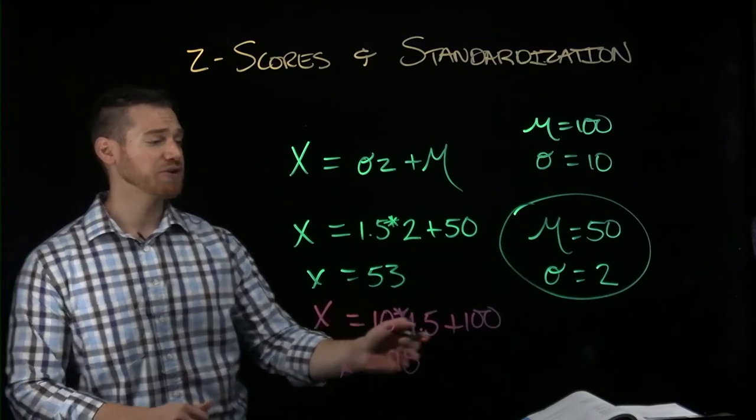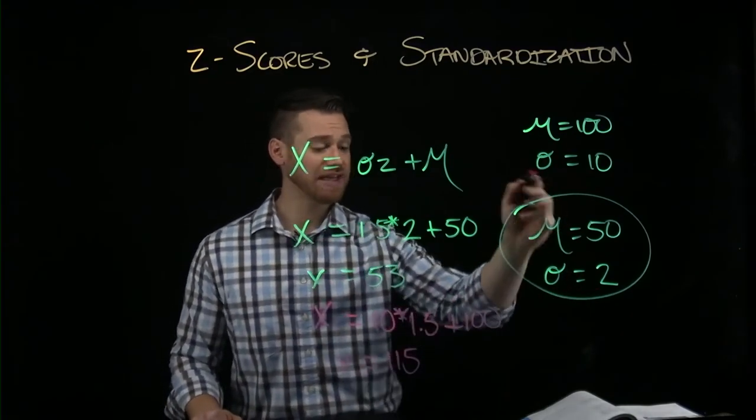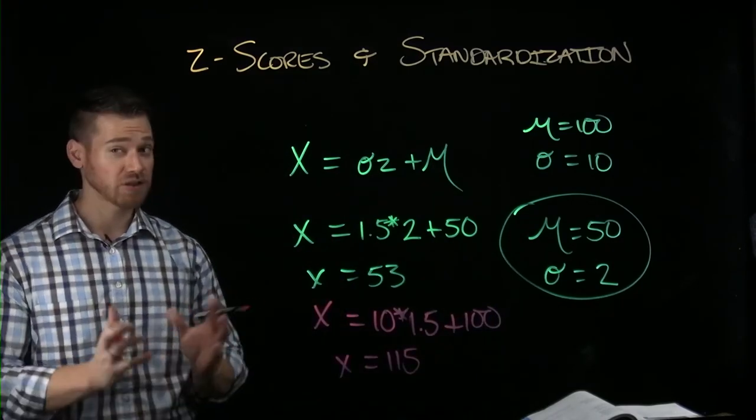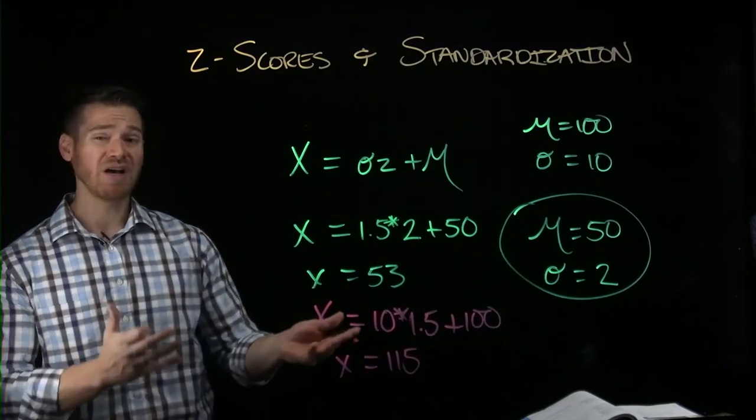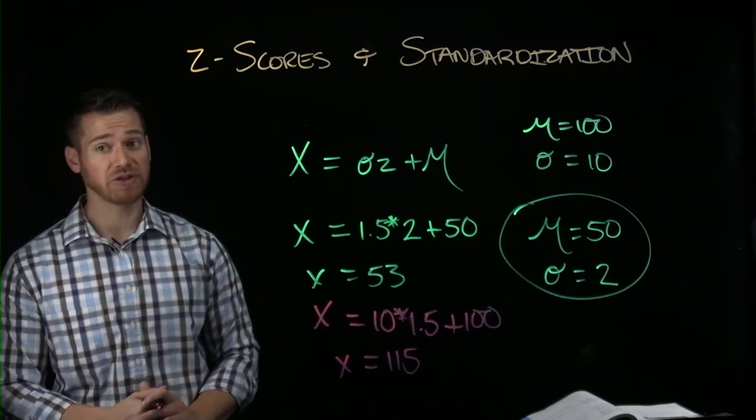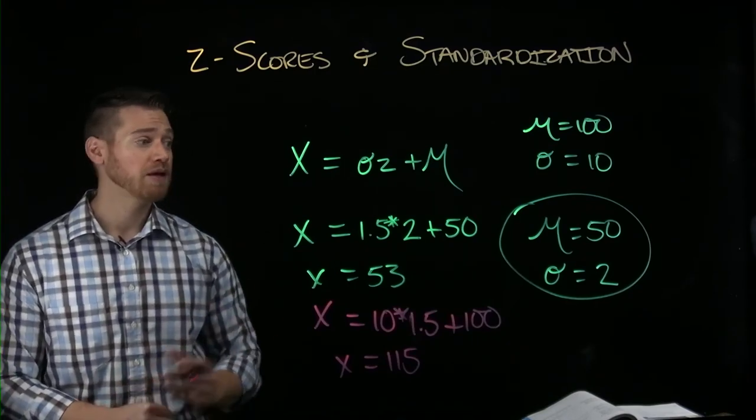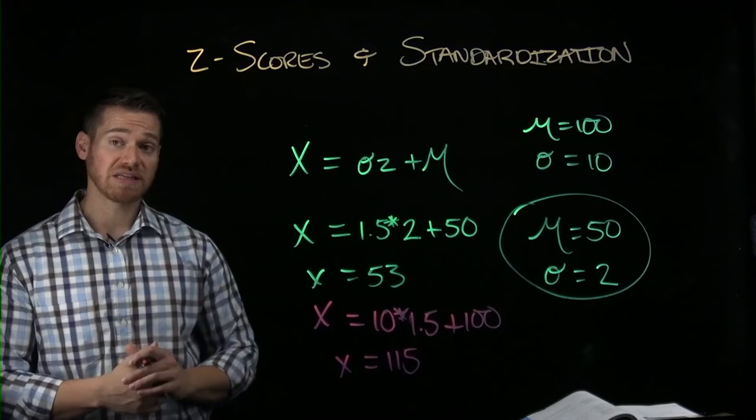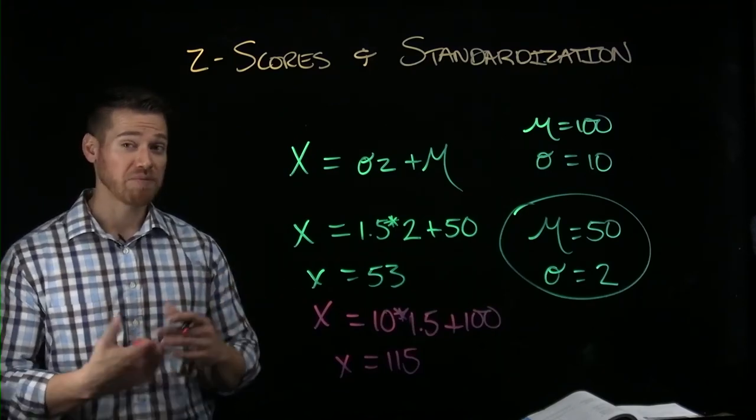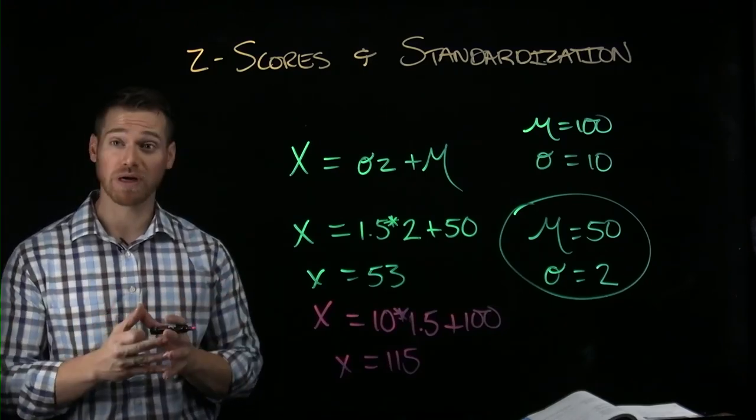And so what you can see in either case, we are 1.5 standard deviations above average. So the relative location is unchanged, the shape of the distribution is unchanged, but we can make this distribution be whatever we want in terms of its mean and its standard deviation, and it won't change the relative locations of the scores within it. So this allows you to then standardize a test to have whatever measure you want for the mean. We can make it 20 or 100 and it doesn't change the scores' locations relative to one another within it.